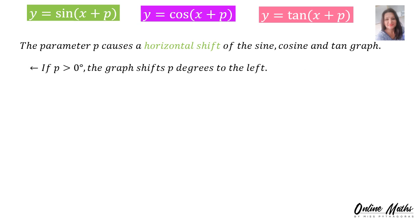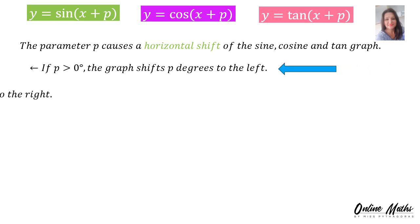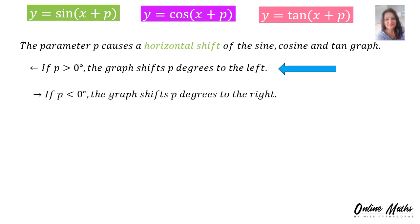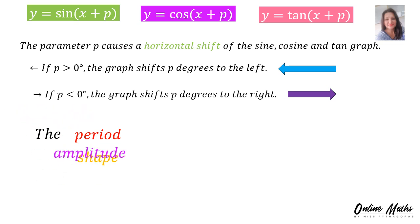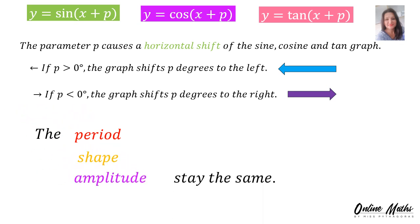If P is greater than 0, the graph shifts P degrees to the left. If P is smaller than 0, the graph shifts P degrees to the right. But the period, shape and amplitude stay the same.